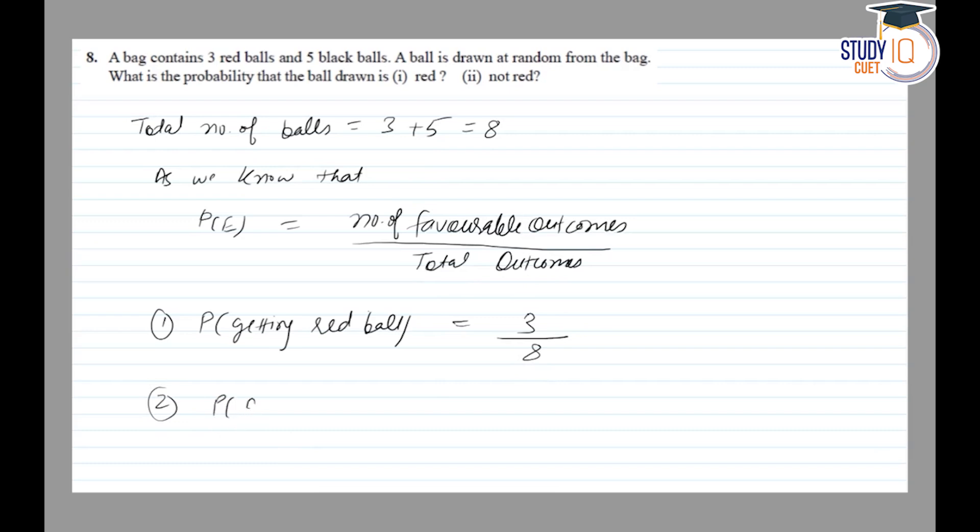Second, probability of getting not red balls. Not red ball means number of balls of different color - black color. So number of black color balls divided by total number of balls.